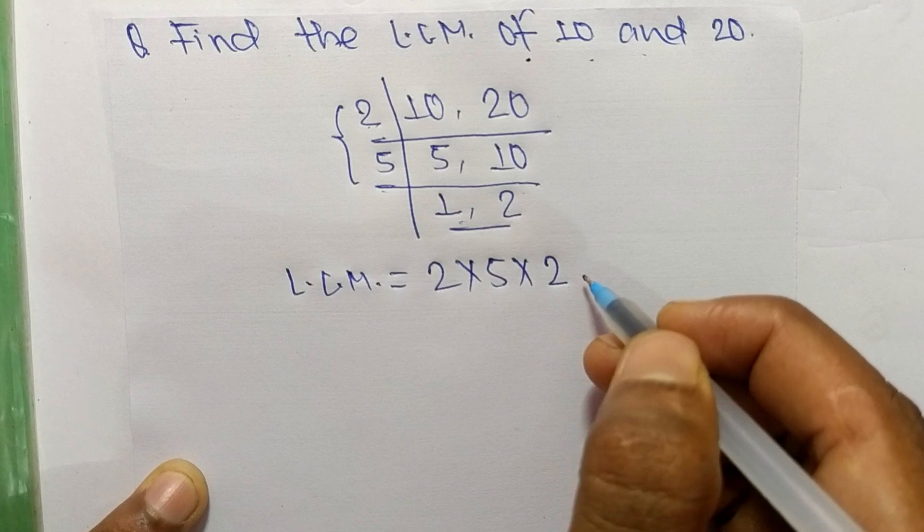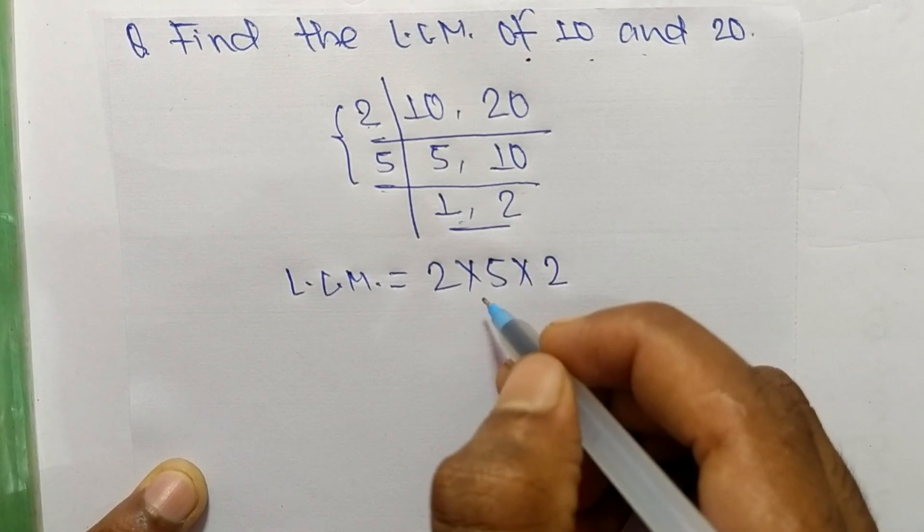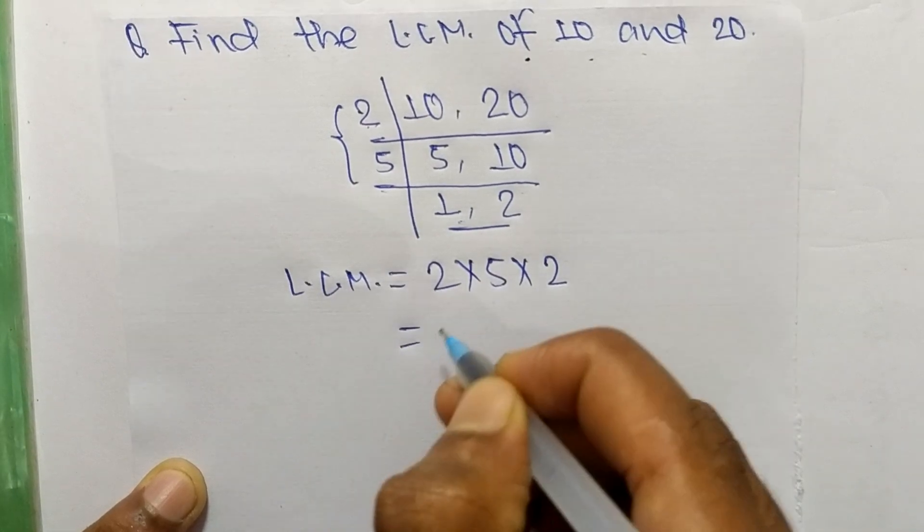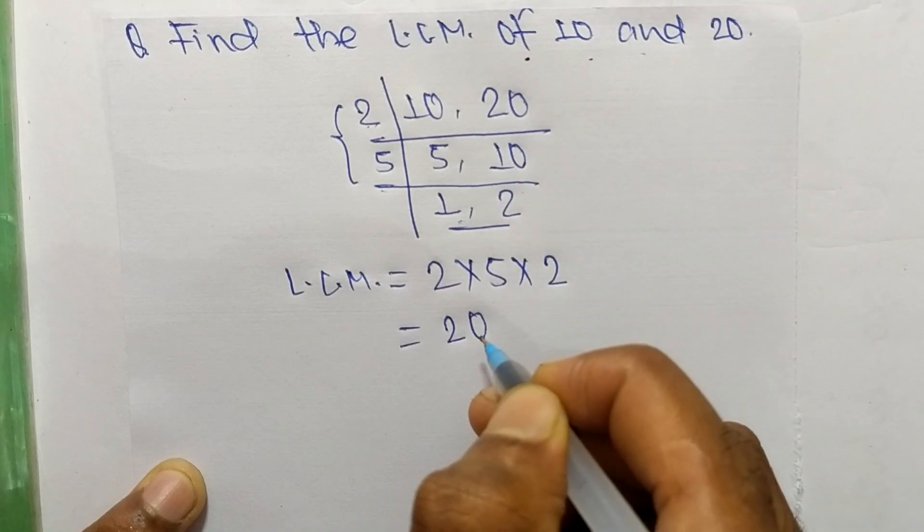So now 2 times 5 means 10 and 10 times 2 means 20.